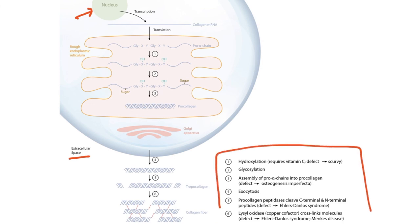From the figure, you can see the collagen mRNA. It enters the rough endoplasmic reticulum and is translated into the pro-alpha chain, which is a precursor for collagen. A pro-alpha chain consists of a repetitive amino acid sequence — glycine XY, glycine XY — showing that glycine is found at every third amino acid position.